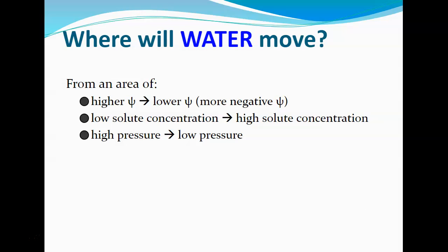Water always moves from higher solute potential to lower solute potential — equivalently, from high water concentration to low water concentration. Higher water potential means low solute (more dilute). Lower water potential means lower water concentration with high solute. When there's high water potential — lots of water, low solute — there's high pressure, and water moves from high pressure to low pressure.